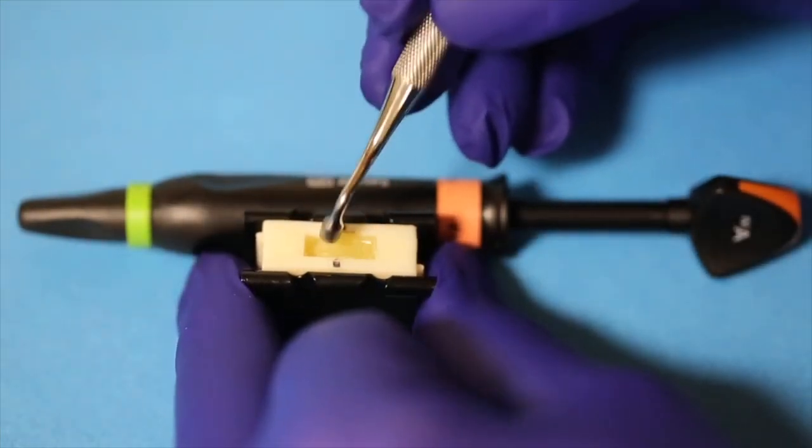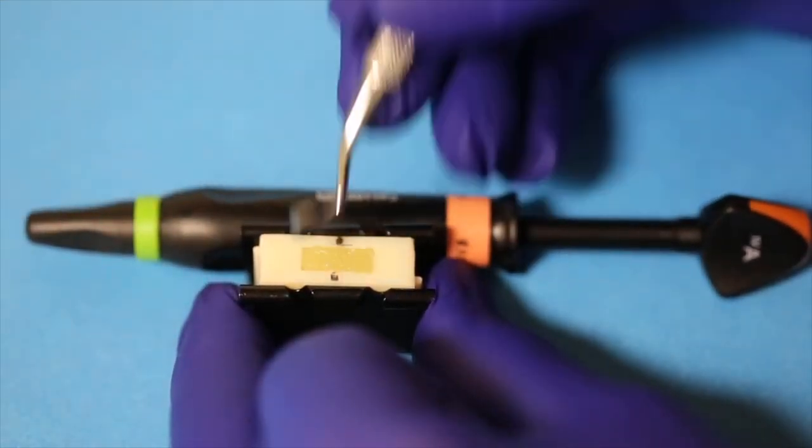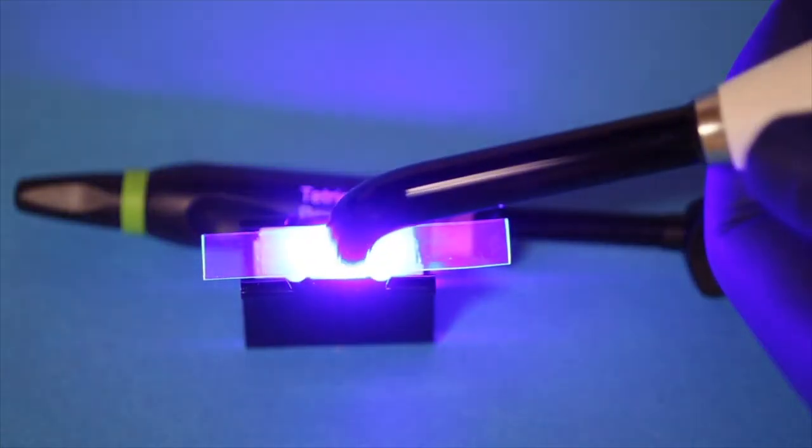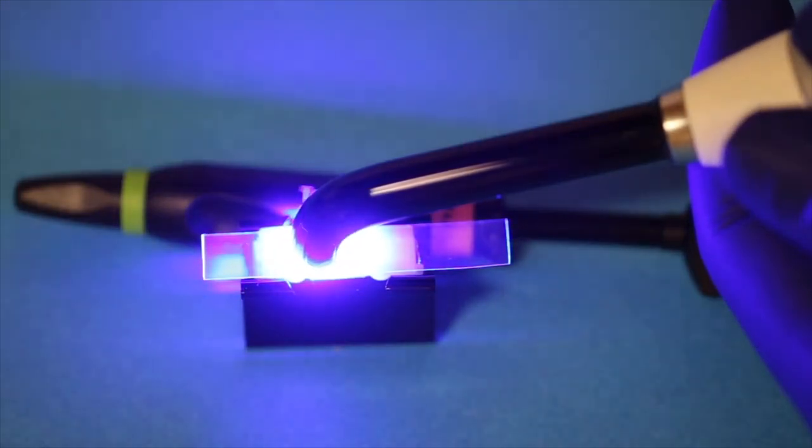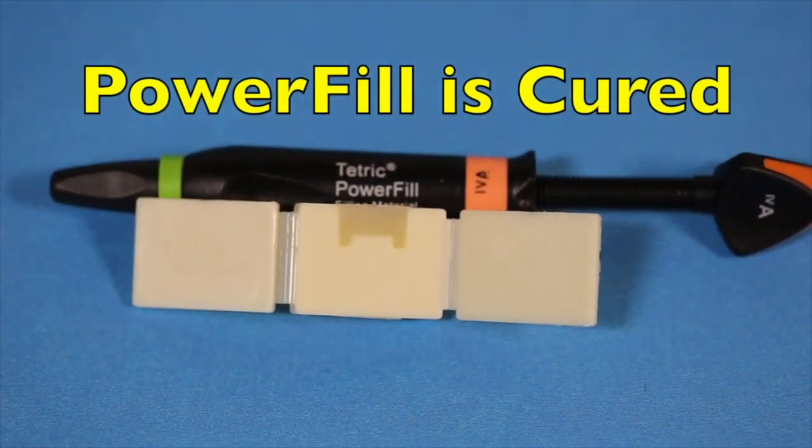Now what you'll see here is that I'm placing the material in bulk and I shall cure the material in bulk for 10 seconds over each of the proximal boxes to completely cover the composite. This is a much faster technique than placing the composite incrementally and light curing each increment.